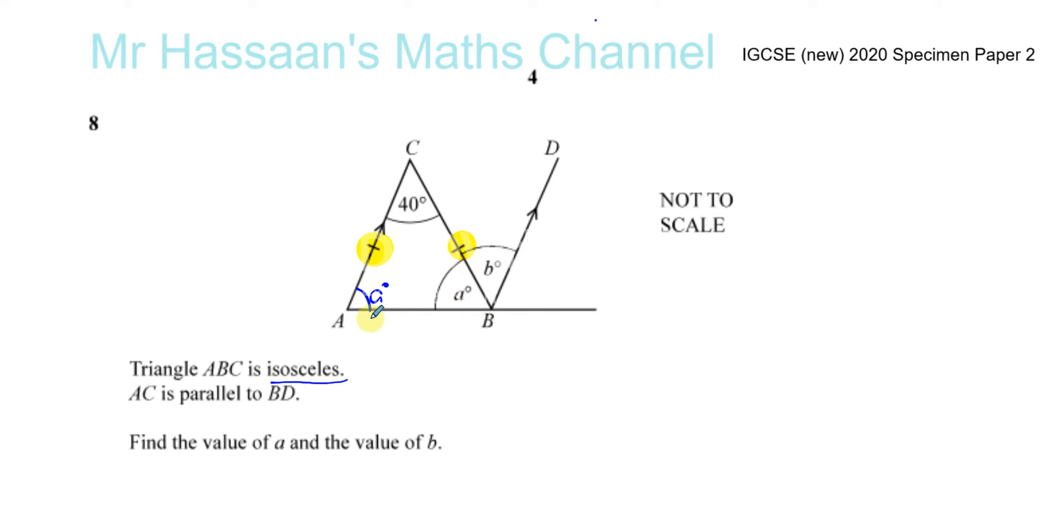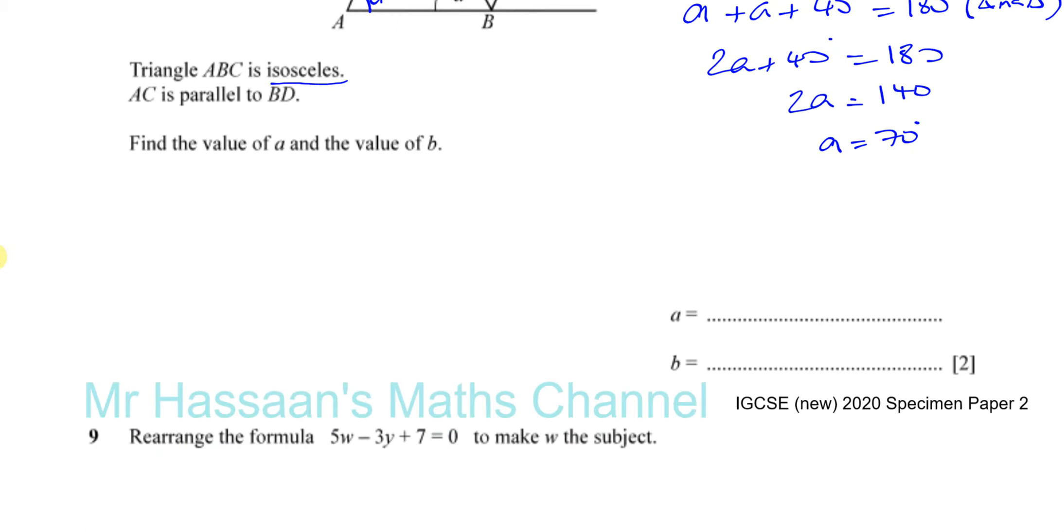So angle A plus angle A plus 40 add up to 180. We can say A plus A plus 40 equals 180 degrees because they're angles in a triangle. Angles in a triangle add up to 180. So 2A plus 40 equals 180. So 2A equals 140, 180 minus 40. So A equals 70 degrees. The value of A is 70.